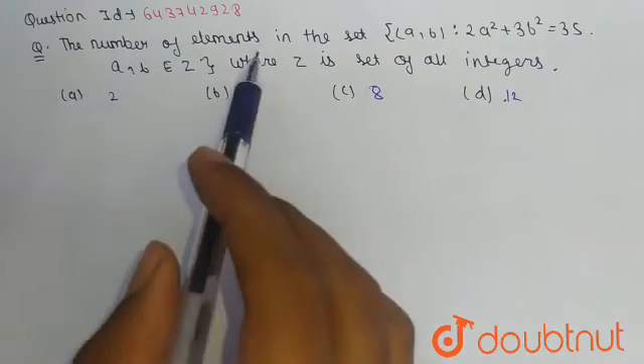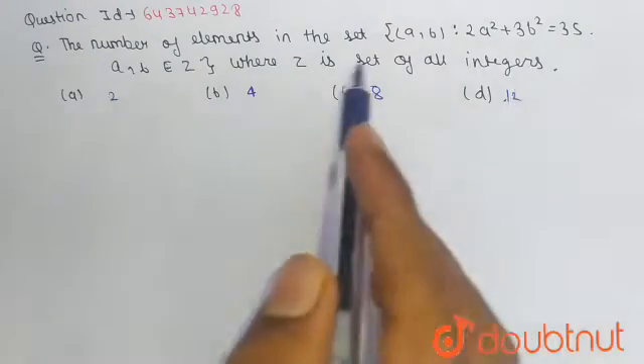is on relation and function. We have to find the number of elements in the given equation. The options are 2, 4, 8, and 12.